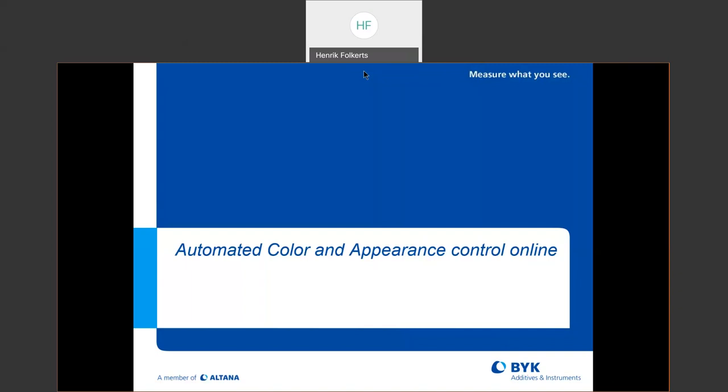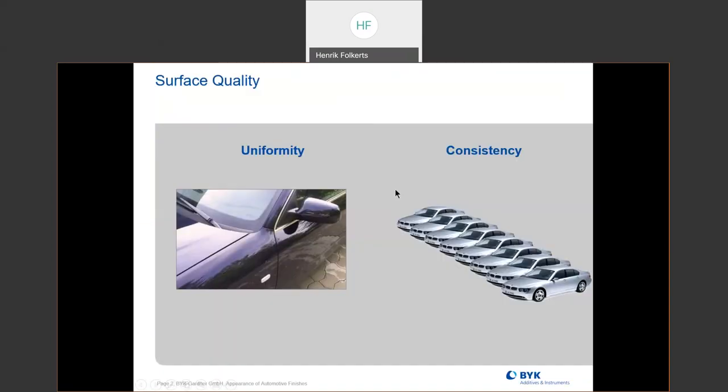I want to give you kind of an overview of that and then what the data can look like in Smart Chart. So why do we want to know the surface quality, the color, the appearance, all these things? Because we want uniformity and we want consistency from vehicle to vehicle and also with the add-on parts.